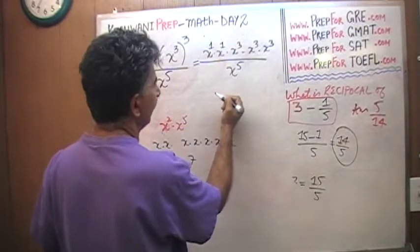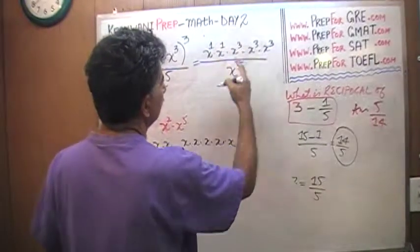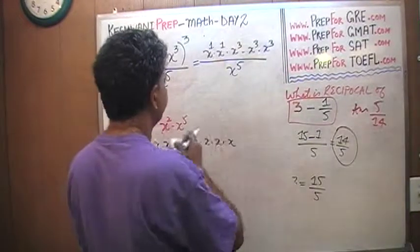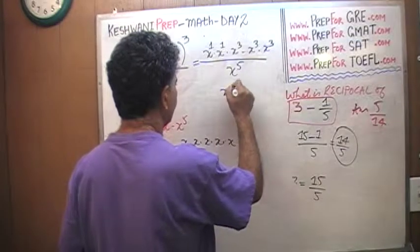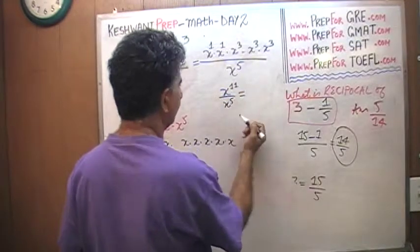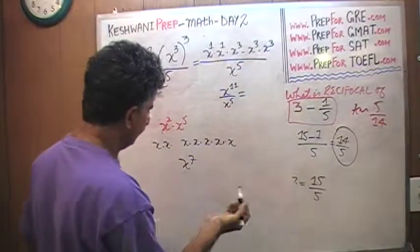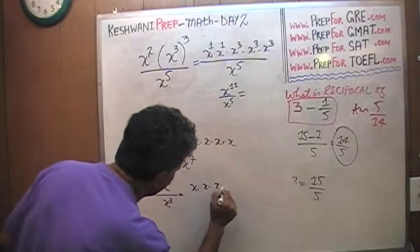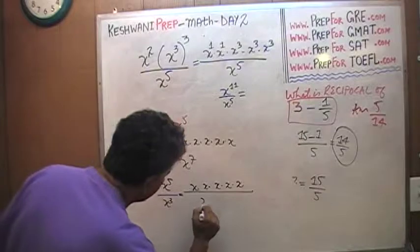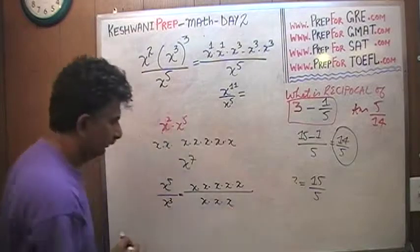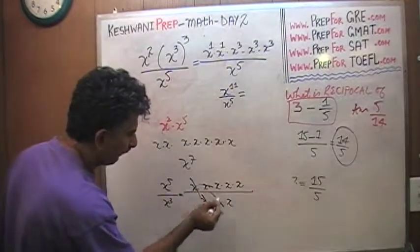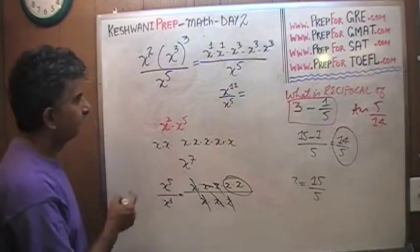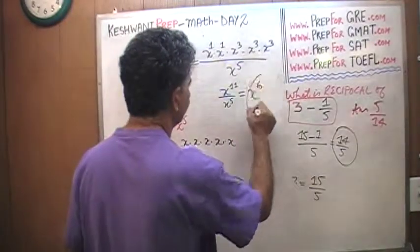The exponents here are 2 plus 9 — because x cubed times x cubed times x cubed gives 3 plus 3 plus 3 equals 9 — so the numerator is x to the 11. Over x to the 5, and in division we subtract the exponents: 11 minus 5 gives us x to the 6. x to the 6 is our answer.